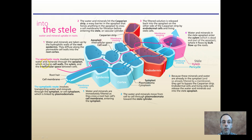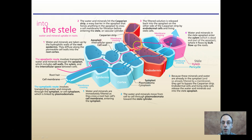To contrast that, we have the apoplastic pathway. This involves transporting water and minerals through the apoplast, which includes the cell walls, the xylem, and the intercellular space between cells. In this pathway, we're not going through the cytoplasm - we're going literally through the cell walls to get to the xylem, staying within the cell walls and the intercellular space.